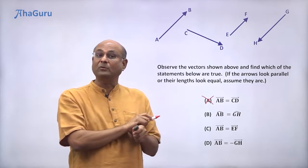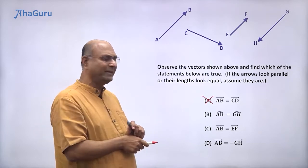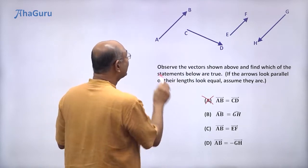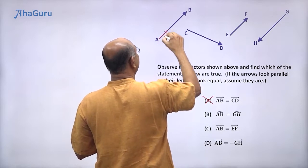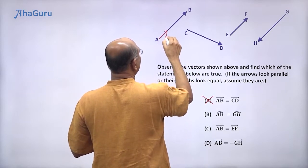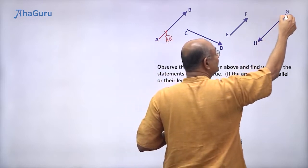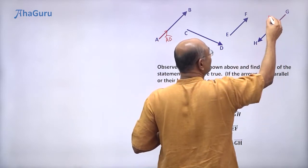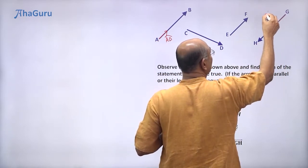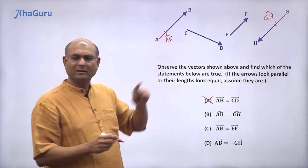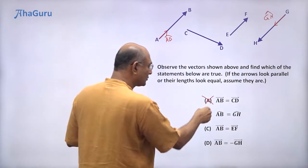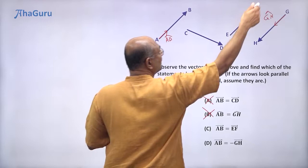AB cap is equal to GH cap. What is AB cap? It is the direction of this vector. This will be AB cap. GH cap will be pointing in this direction. That would be GH cap. Are they equal? No, they are in opposite directions, so they are clearly not equal.